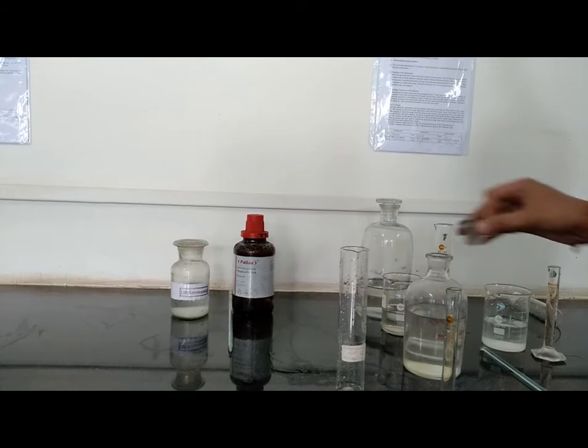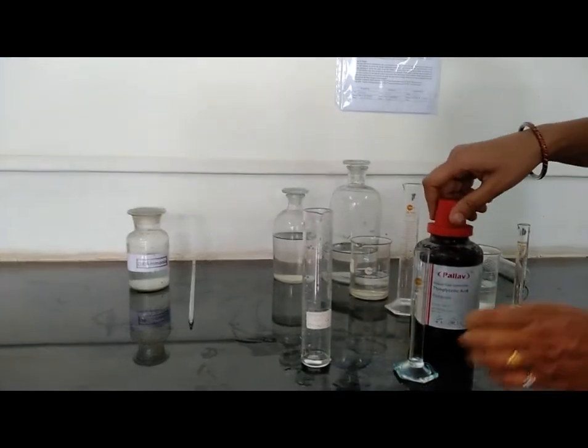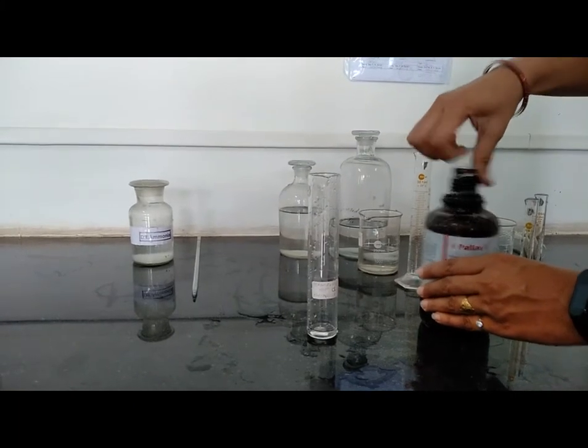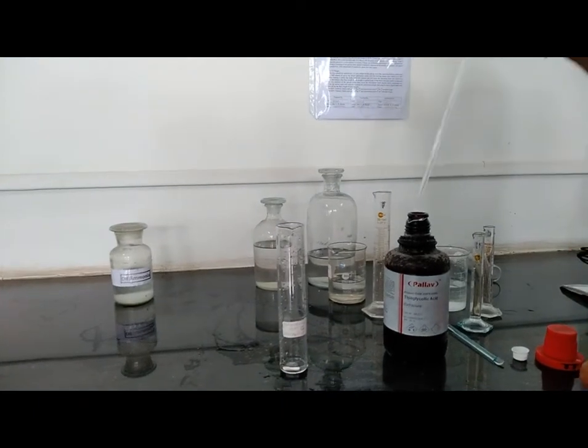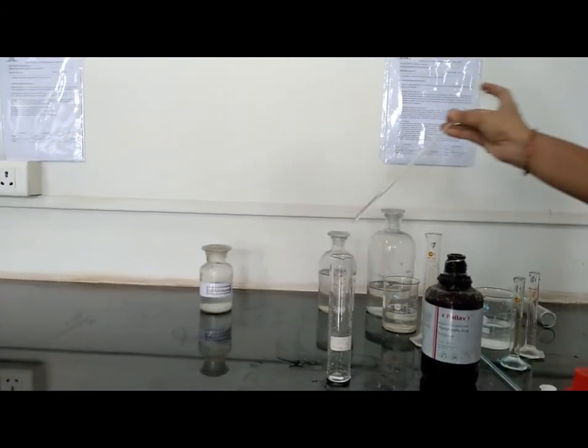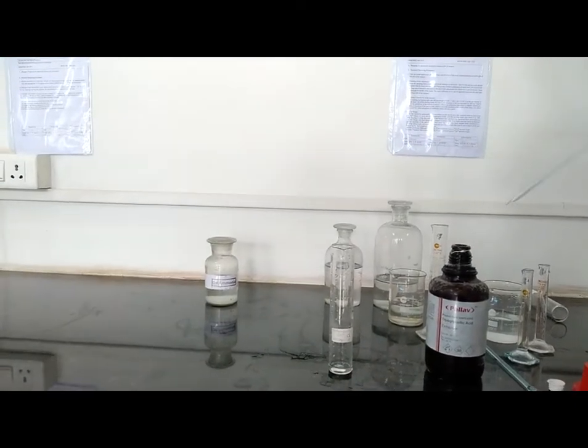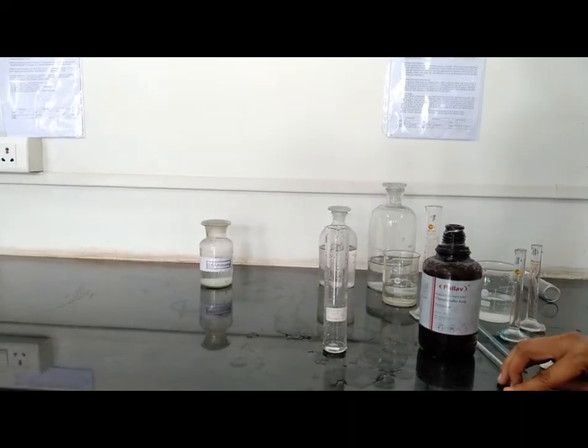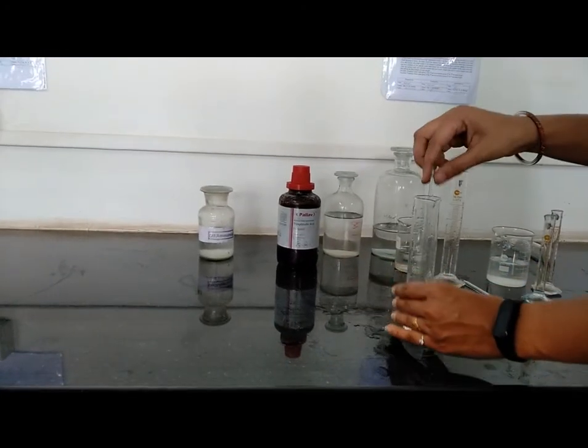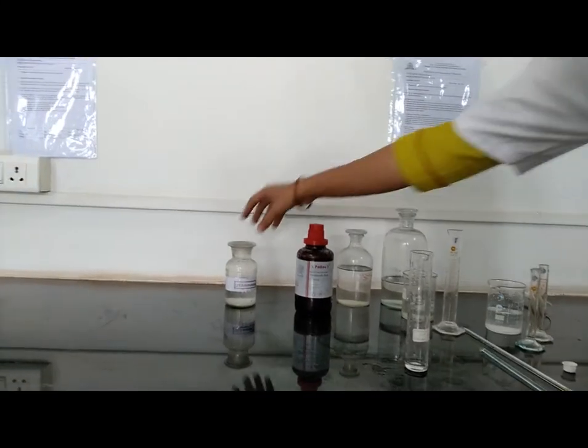Then add 0.1 ml of thioglycolic acid into Nessler cylinder. Mix it properly with the glass rod.